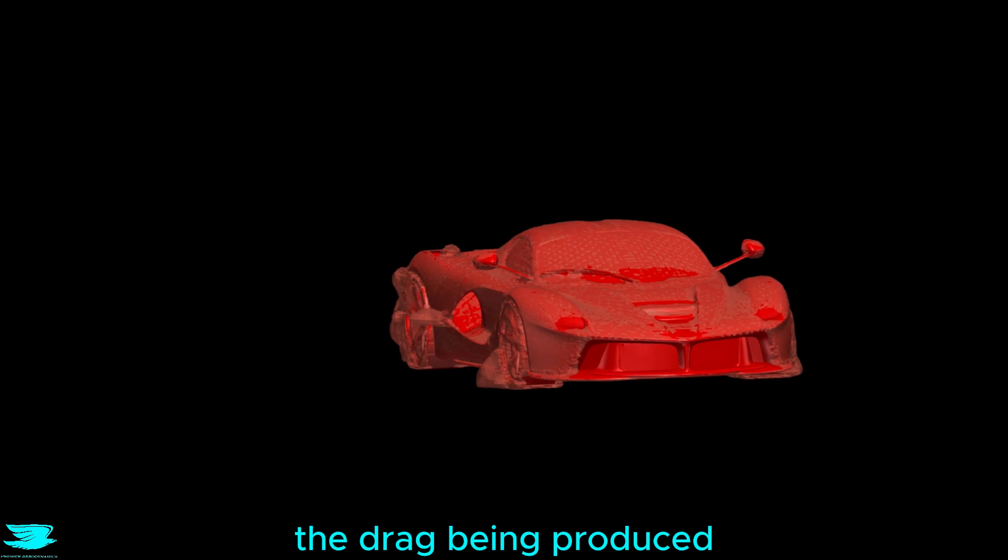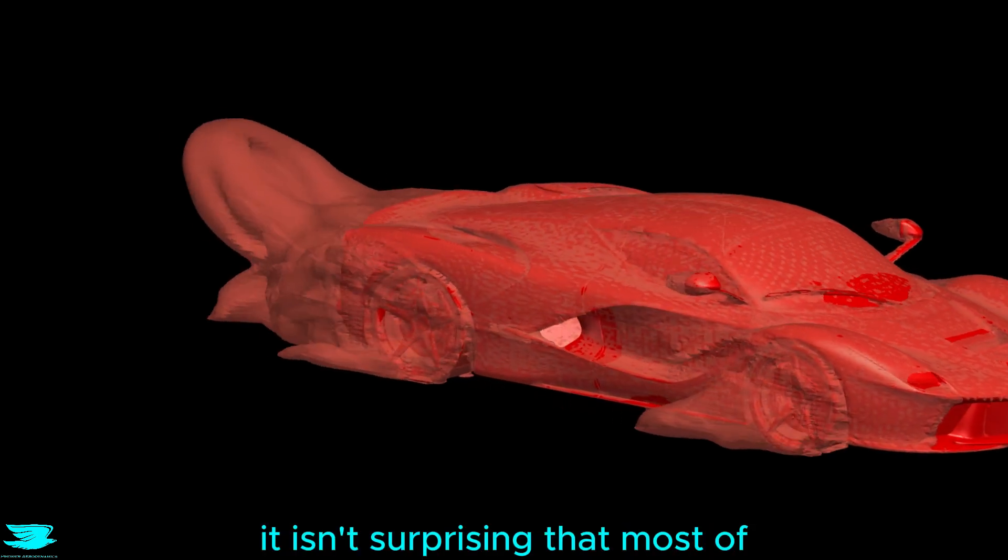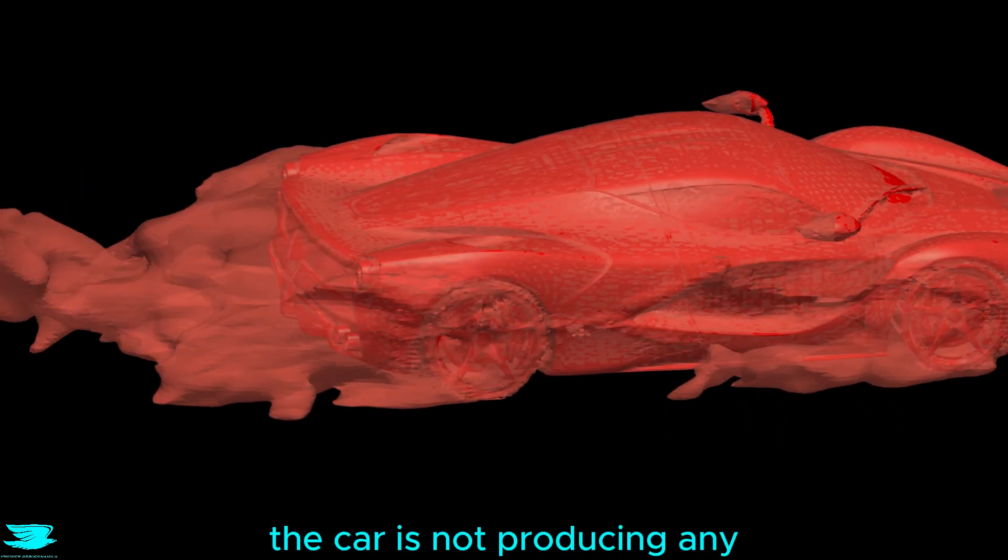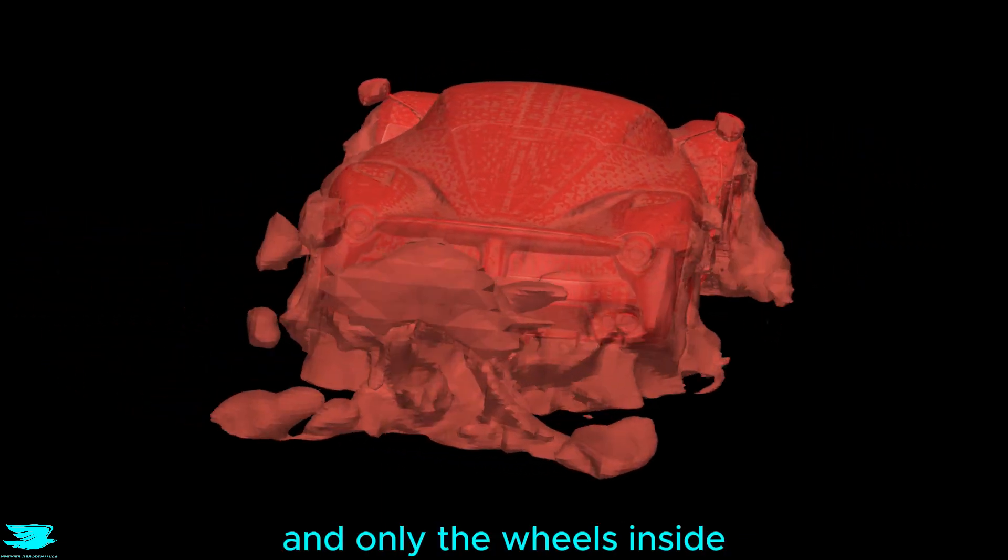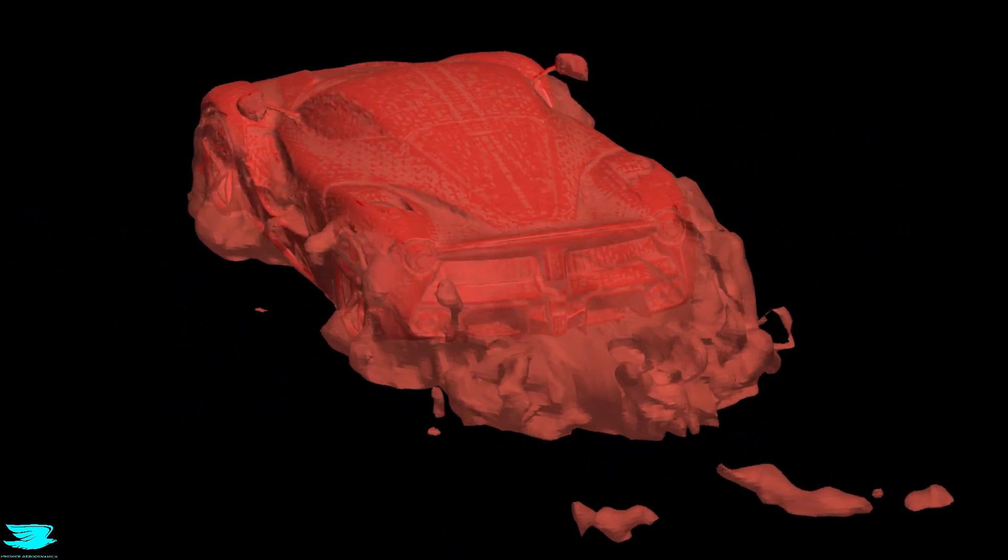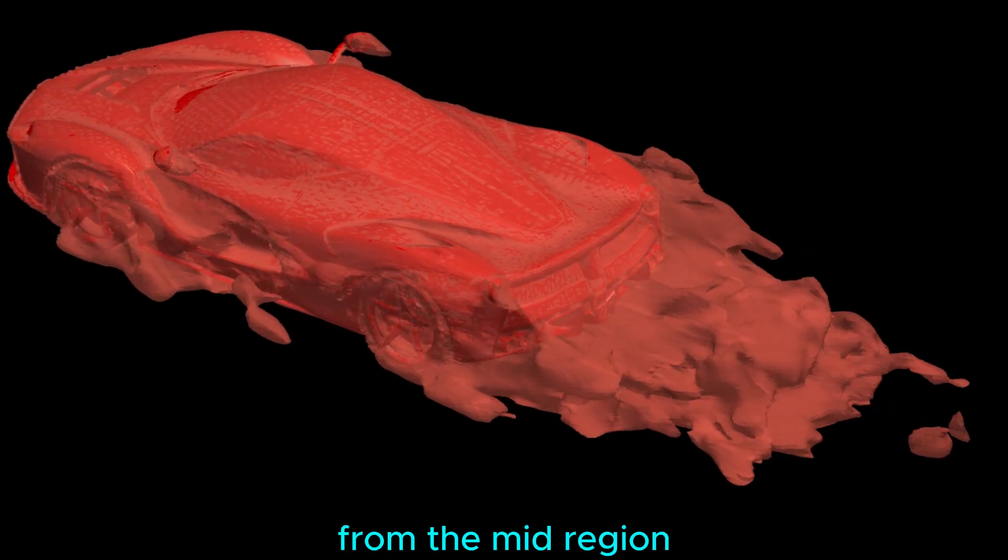Looking at the isosurfaces of the drag being produced, it isn't surprising that most of the car is not producing any. Even the hugely exaggerated front and rear wheel arches are performing perfectly, and only the wheels inside them are producing drag. Even the drag in the wake is mostly coming from the mid-region.